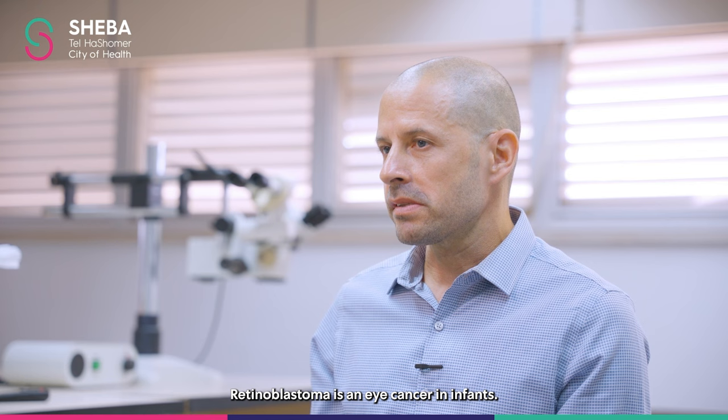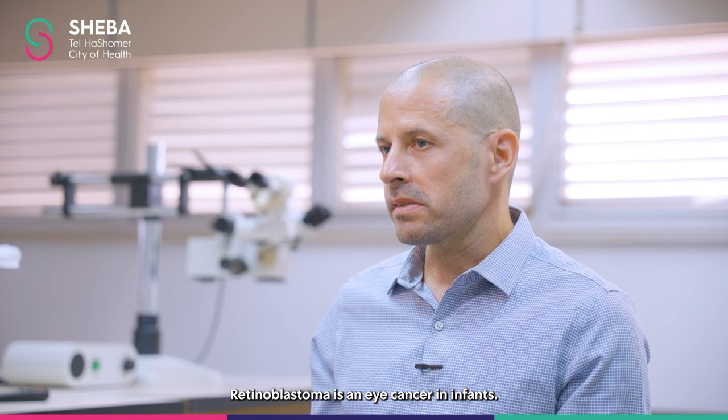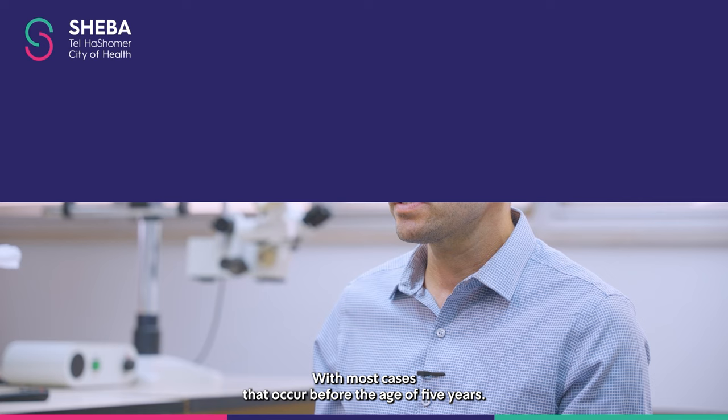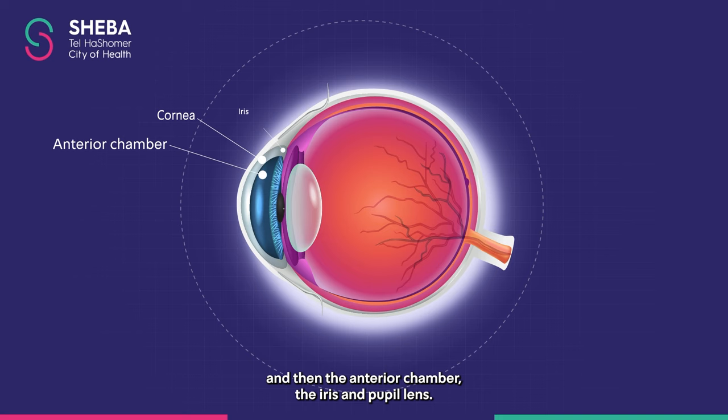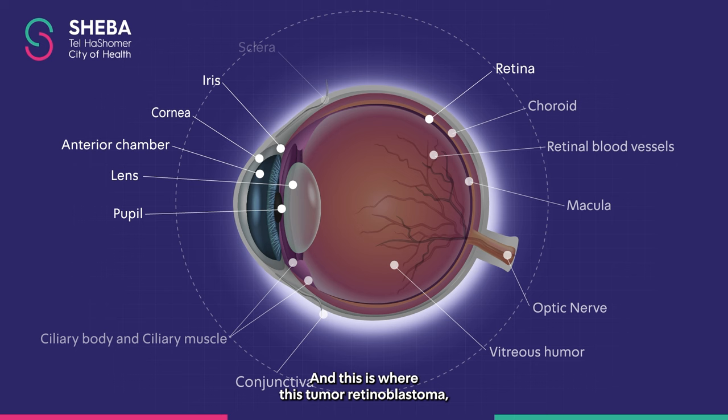Retinoblastoma is an eye cancer in infants, with most cases occurring before the age of five years. If you look at the eye, you have different chambers: in the anterior part you have the cornea, the anterior chamber, the iris, pupil, and lens; and in the posterior part you have the retina. This is where this tumor, retinoblastoma, originates — it comes from the word retina.